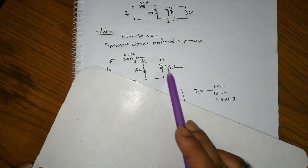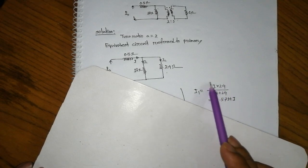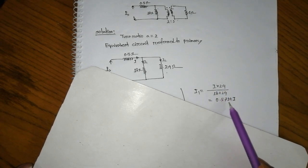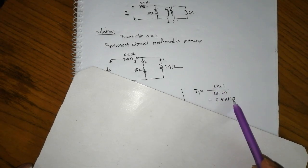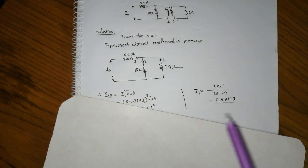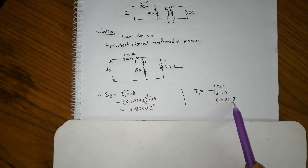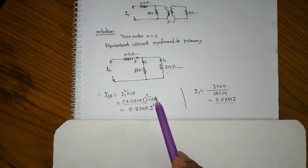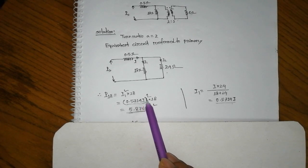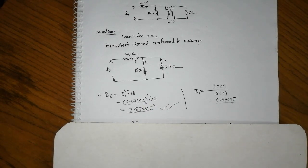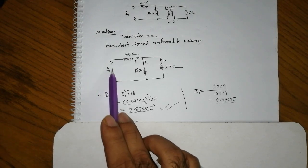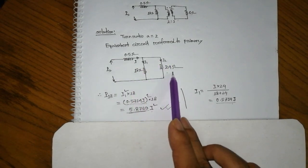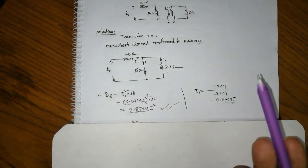I1 equals the current divided by the resistance. I1 is approximately — but for I1, I1 is... Total power, total power — E times I, the total power.